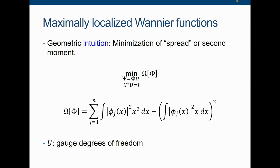The standard way to do it is to minimize the spread. This looks like a variance: this is the second-order moment, this is the first-order moment subtracted. You minimize this functional with respect to U — the gauge degrees of freedom. Once you have achieved the minimizer, this is the corresponding spread, and what you obtain are the localized orbitals.